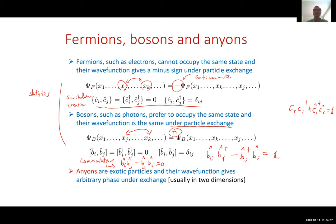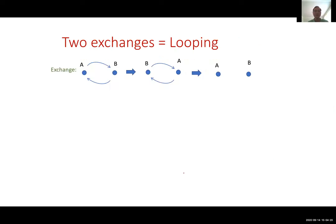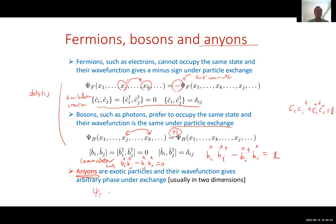Qubits that use topological effects involve particles called anyons. Anyons are exotic particles where, when you exchange the wave function, there is an arbitrary phase — not just plus one or minus one as for bosons or fermions. In fact, it can be even more complicated: not just a phase, but a matrix involving many components of the wave function.